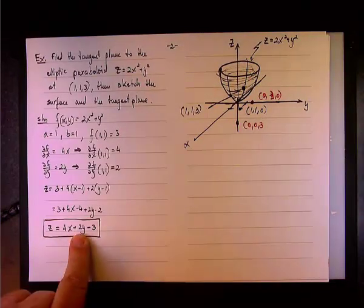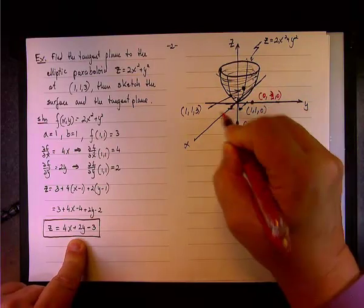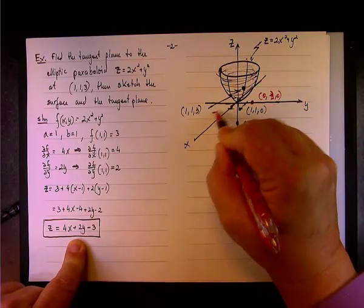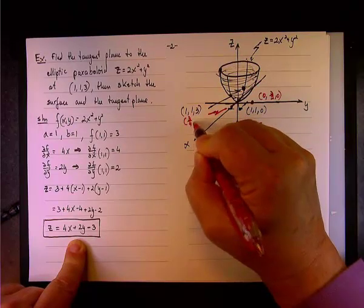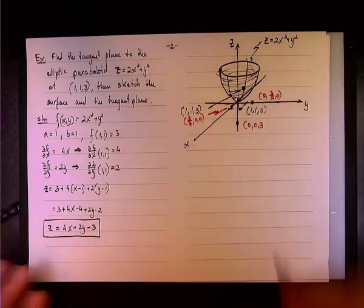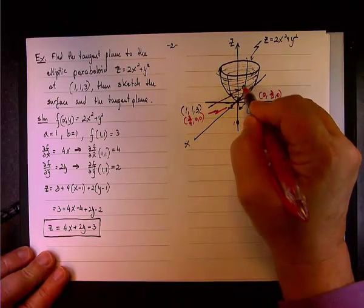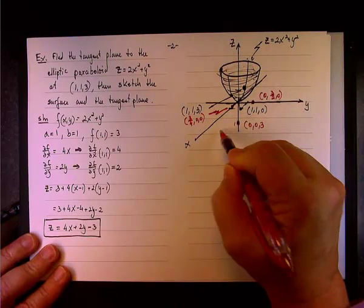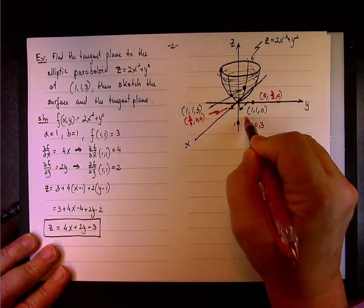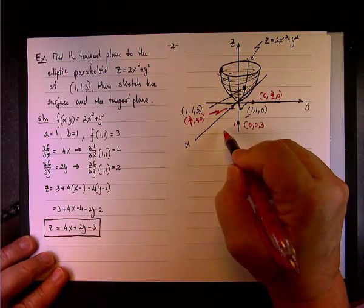And when y and z equals 0, the x-intercept will be 4x minus 3 equals 0, or x equals 3/4. So, it's about right here. We'll have this x-intercept, so it will be 3/4, 0, 0. So, we have 3 intercepts, and we also, we know that we have a tangent right here at this point. So, what I'll do, I'll draw something like that. Try to draw...